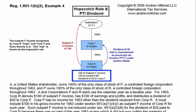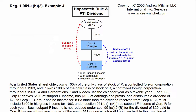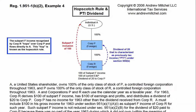Corp. R earned $100 of subpart F income during the year. The $100 of subpart F income was treated as an inclusion in A's U.S. taxable income, even though A did not directly own the shares of Corp. R, and A did not receive any cash from Corp. P or Corp. R during the year. The inclusion went directly from Corp. R to Individual A, skipping over Corp. P. This skipping over of Corp. P is known as the hopscotch rule — the income inclusion hopped over Corp. P.